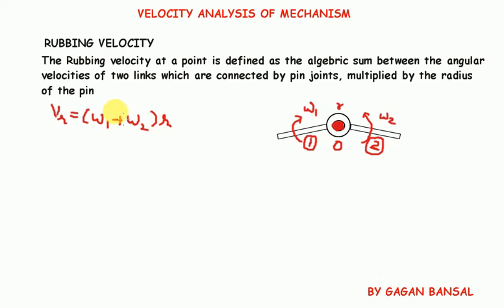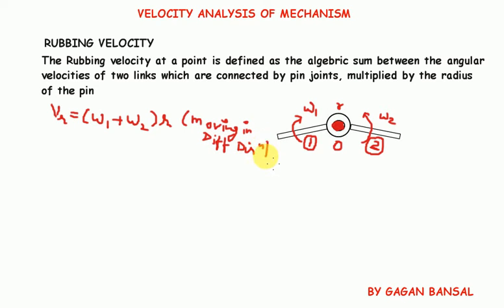Here omega one is the angular velocity of link one, omega two is the angular velocity of link two, and r is the radius of the pin. This formula applies when the two links are moving in different directions. When they are moving in the same direction, the rubbing velocity is omega one minus omega two into r.